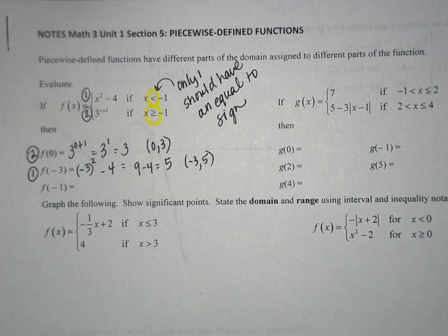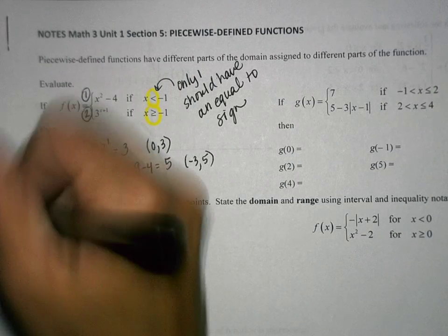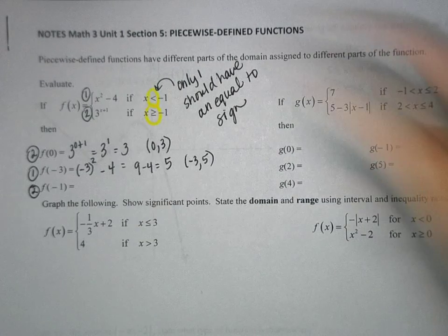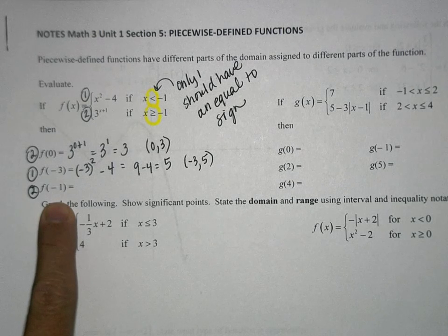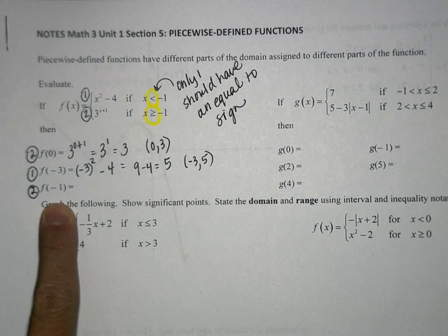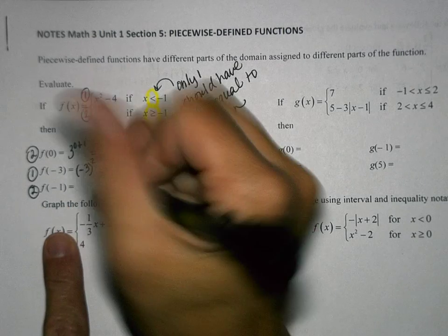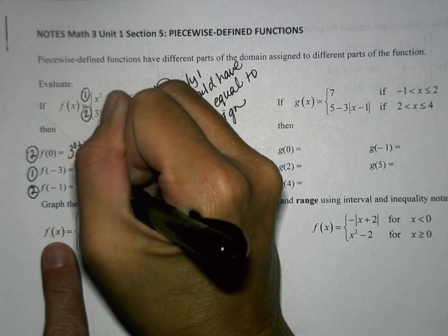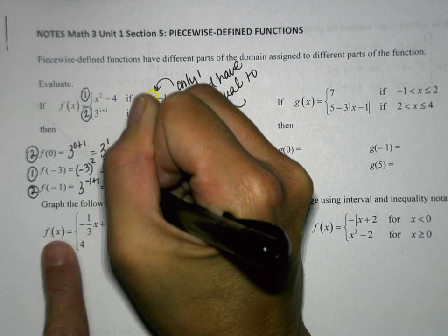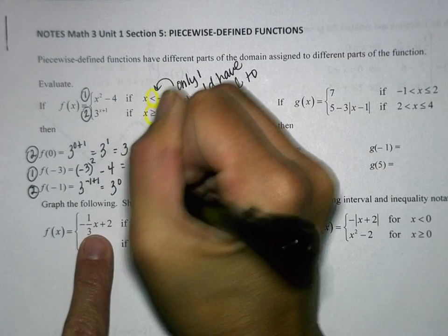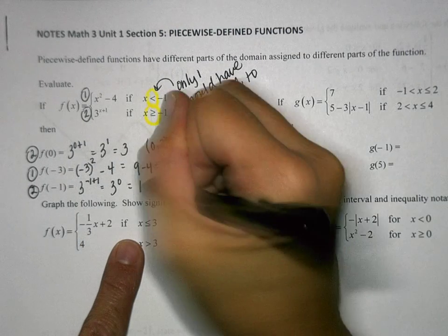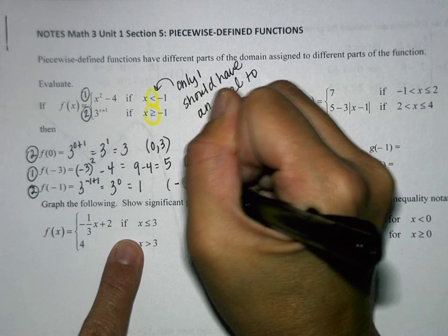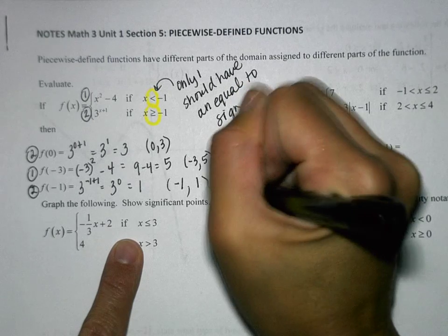For the value of negative 1, we use equation 2, because that's the one that has the equal to sign. If we want to find negative 1, we use the one with the equal to sign. So we plug that in: we get 3 to the negative 1 plus 1, which is 3 to the 0. Anything to the 0 power is 1. So that ordered pair is (negative 1, 1).